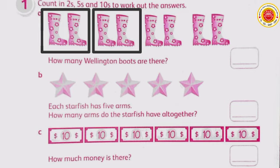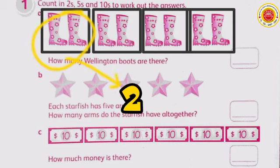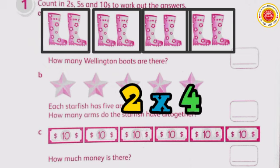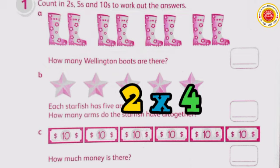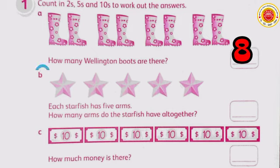Look, there is one, two, three, and four — ada empat pasang sepatu (there are four pairs of boots). Ms. said one pair of boots has two boots. So, two times four equals eight. Okay, correct — dua kali empat sama dengan delapan (two times four equals eight).